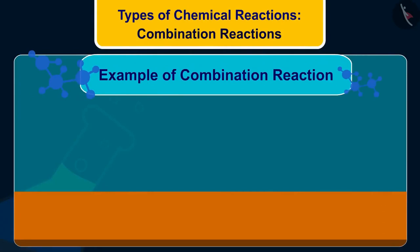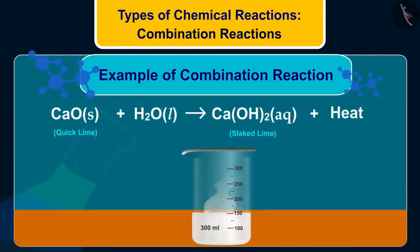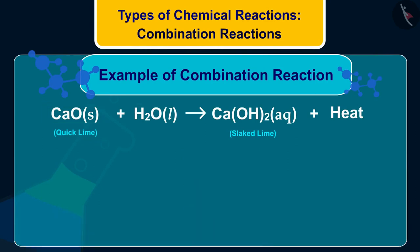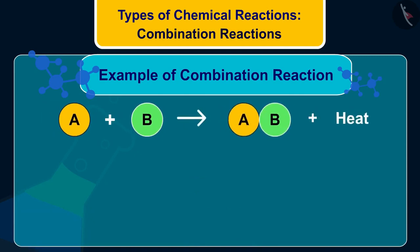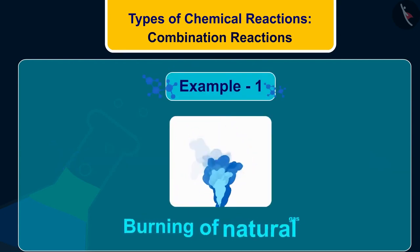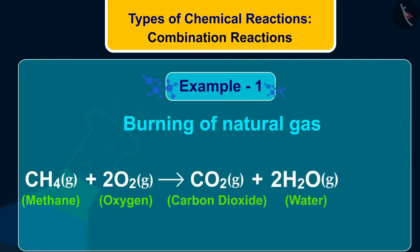We observed in our first example that a large amount of heat energy was evolved when we added water to quicklime — calcium oxide, CaO. Such reactions in which heat energy is evolved are called exothermic reactions. Let us now discuss a few examples of exothermic reactions. The first example is burning of natural gas. Methane (CH₄), when burnt in air, reacts with oxygen to form carbon dioxide and water along with a large amount of heat. So, it is an exothermic reaction.